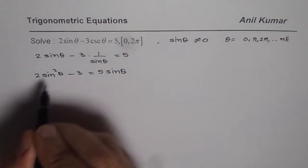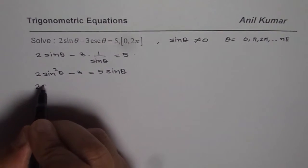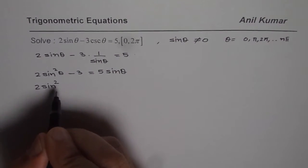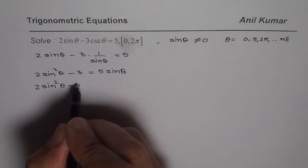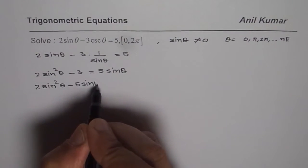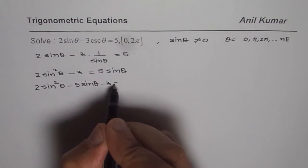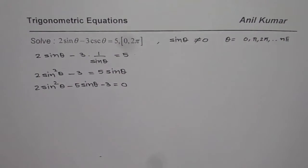Now bring every term to left side. So we get 2 sin square theta minus 5 sin theta minus 3 equals to 0. So you see you get a quadratic equation in sin.